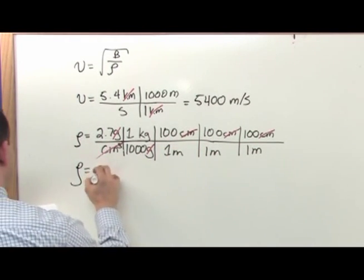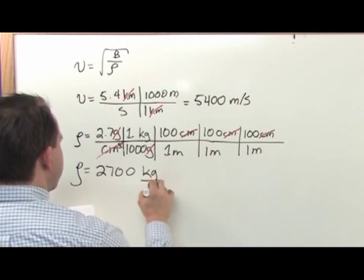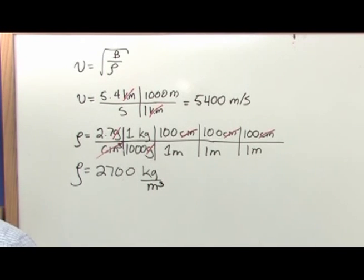So rho is going to be 2.7 divided by 1,000 times 100 times 100 times 100, and what you will get is 2,700 kilograms per cubic meter. Now we're in good shape.